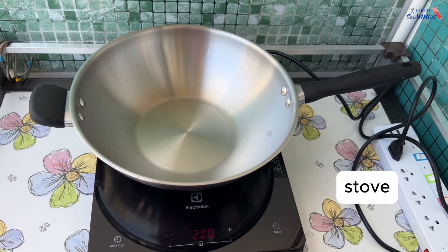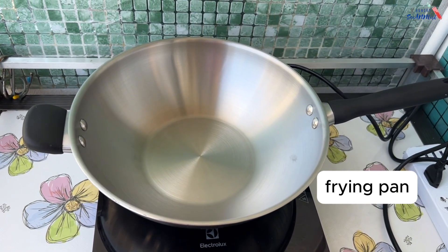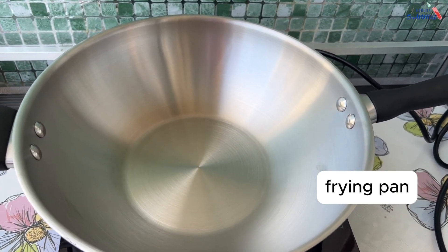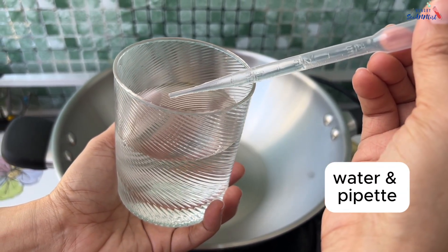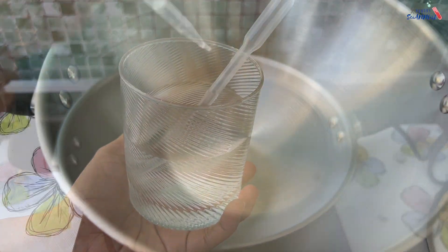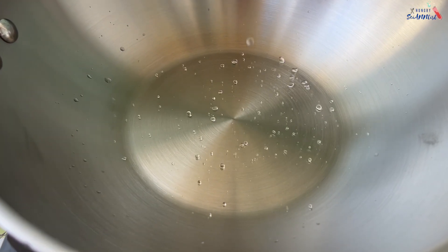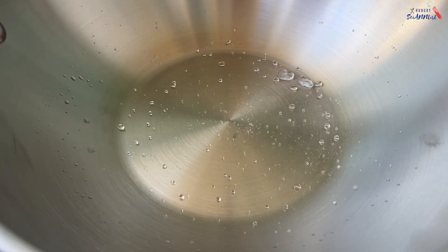In this experiment, we need a stove, a frying pan, a glass of water, a pipette, and adult supervision. Turn the stove on then add a few drops of water on a very hot pan.